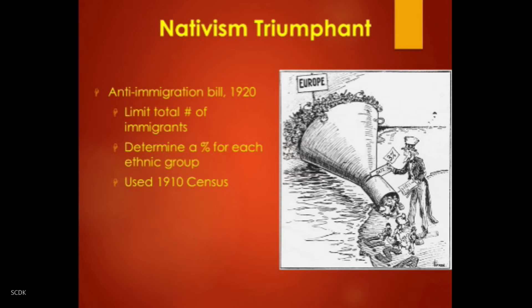So the bulk of those allowed would be Germans, British, and Scandinavians — about 600,000 total slots for Europeans, many of which would probably not be filled. The bill went back to the House, which then proceeded to lower the figure to 3% of the population, about 350,000 total, which would be the quota for that time.